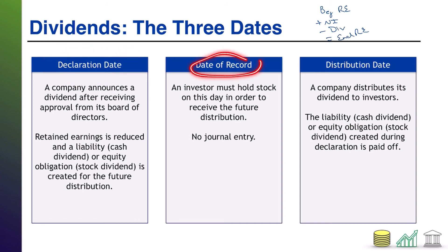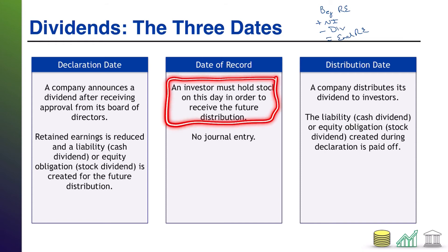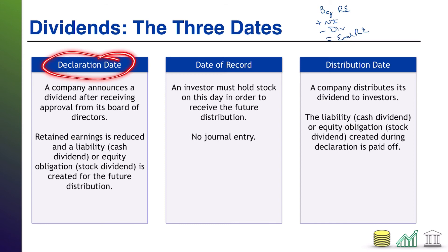Next is the date of record. The date of record is not an accounting date — it's the date on which an investor must hold the stock in order to get the dividend. That's still not the day they get the dividend. Usually the declaration says something like: 'We will pay this amount of dividend on this date to stockholders of record as of this date.'